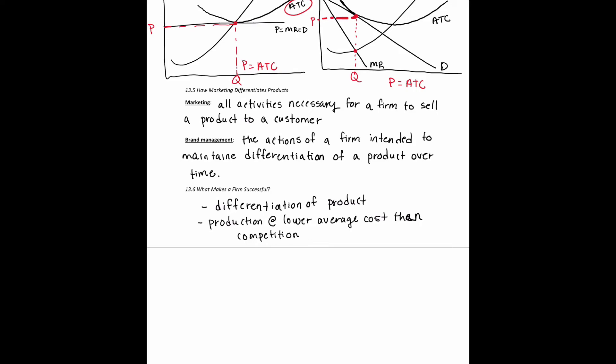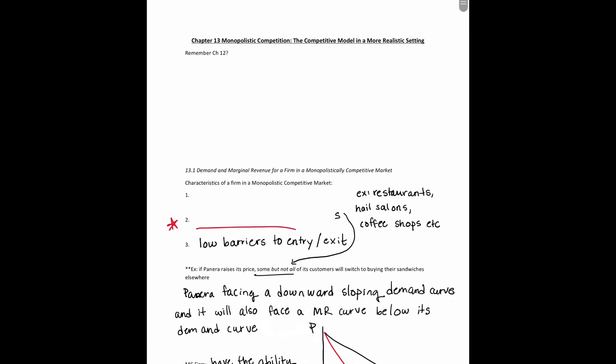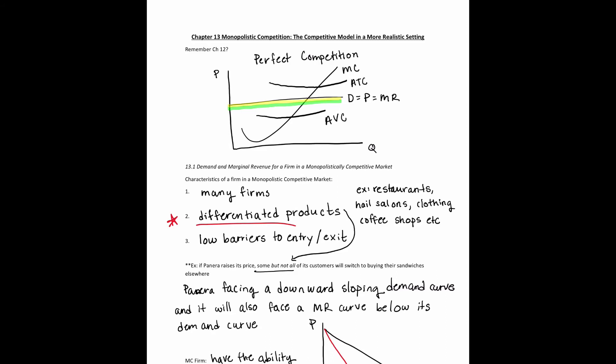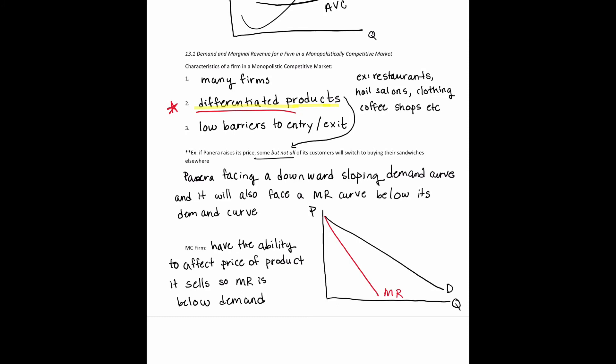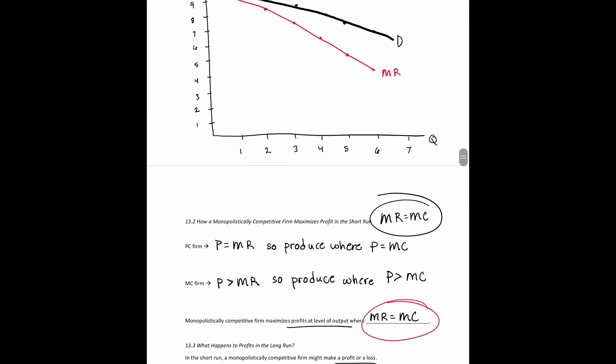Overall, the key takeaways from this chapter: monopolistically competitive firms need differentiated products, versus perfect competition firms that had homogeneous or similar products. Differentiation enables a firm to affect the price of its product, which leads to a downward sloping demand curve. And we are still using MR = MC as our profit maximizing level of output. I hope this video was helpful — if you have questions, please email me.